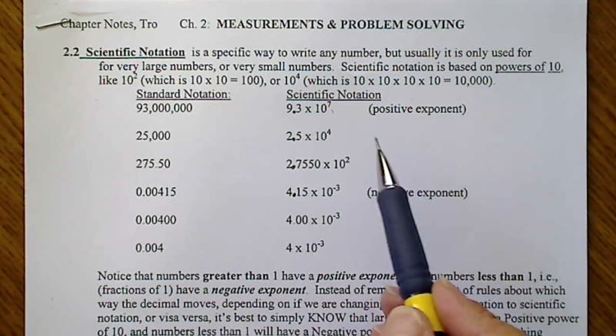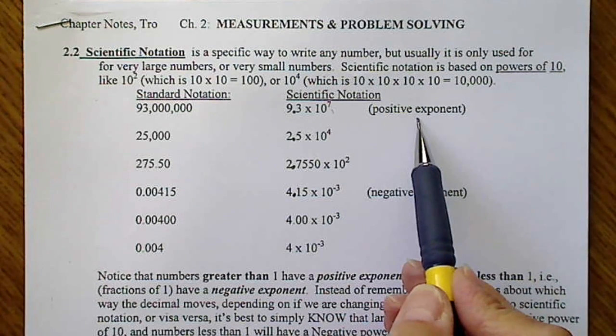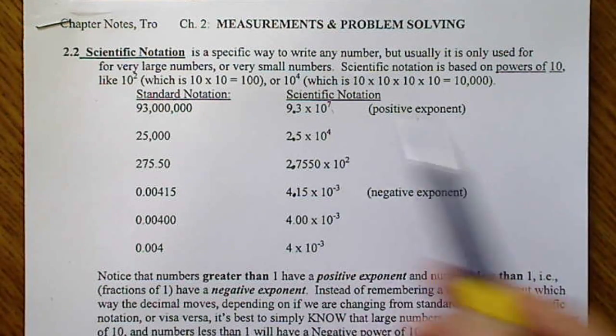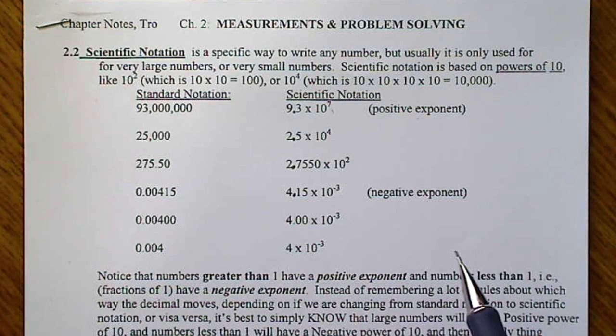And as a reminder, a large number is always going to have a positive exponent or a positive power, and a small number will always have a negative exponent.